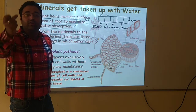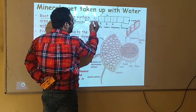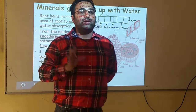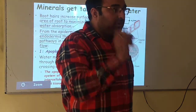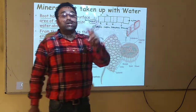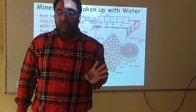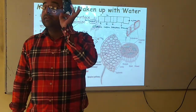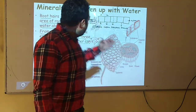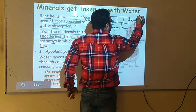Soil water and minerals travel through the plant. Water plus minerals from the soil enter the plant. We have 3 paths. Water and minerals from the soil — what are they going to do in the plant?